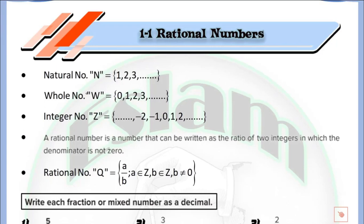We can say that we have a new set which is defined by the whole numbers. The only difference between the natural numbers and the whole numbers is that we have zero. So any natural number will belong to the whole numbers, and for the whole numbers we just write all of the natural numbers and add zero.